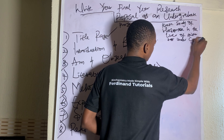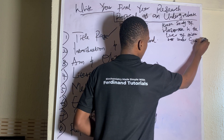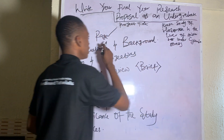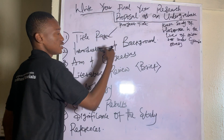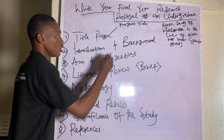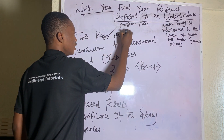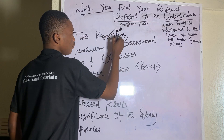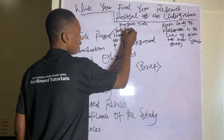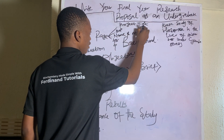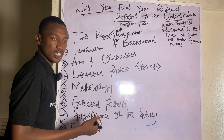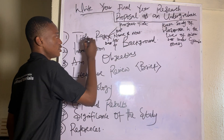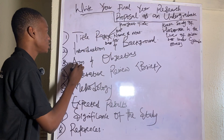Continuing with that example topic: 'Kinetic Study of Rhodanese in the liver of Wistar rats under cyanide stress.' After the project title, your title page should also include your name, your supervisor's name, your institution, your matriculation number, and the date.